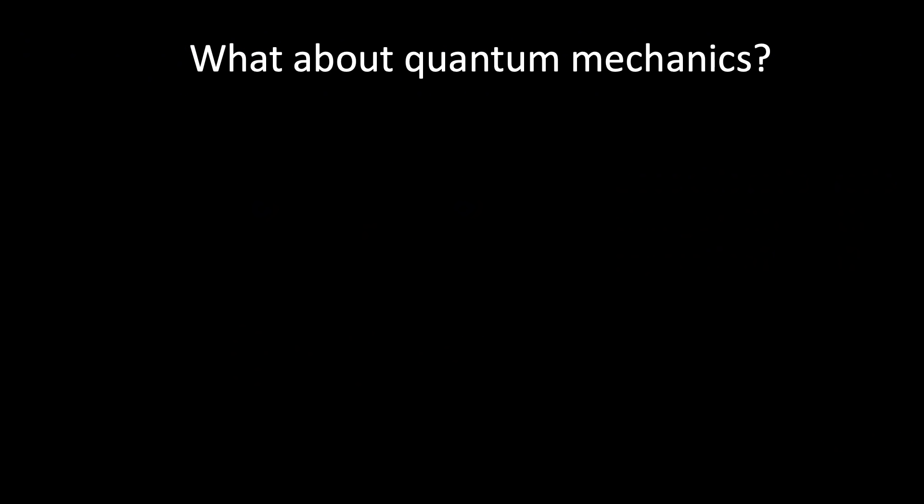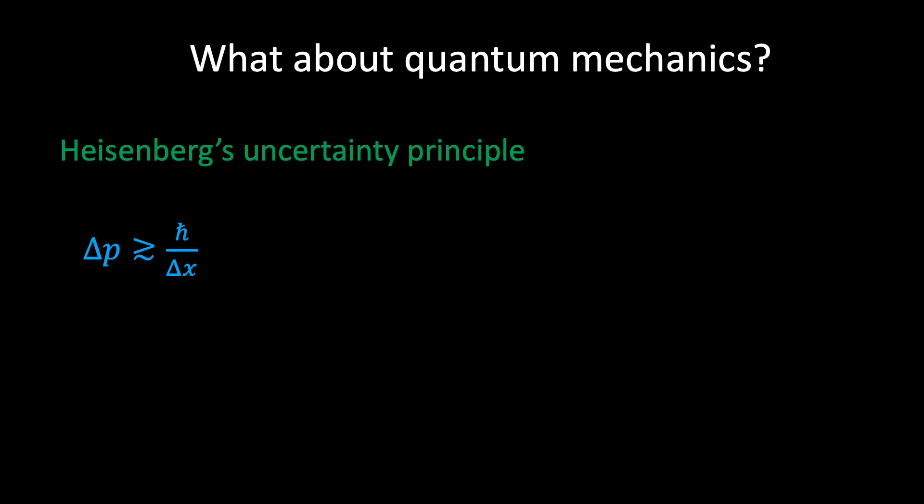In essence, Heisenberg's uncertainty principle tells us that if we confine an object to a region of space of size Δx, then the uncertainty in the momentum of the object must be roughly greater than ħ divided by Δx, where ħ is a tiny number referred to as the reduced Planck's constant. If we consider our two-electron system separated by a distance r, then we can assume for our purpose that Δx equals r, and we can write Δp must be roughly greater than or equal to ħ over r. If the two electrons gain momentum, it follows that they must also gain energy. We can rewrite the uncertainty relation in terms of energy by multiplying both sides by the speed of light.